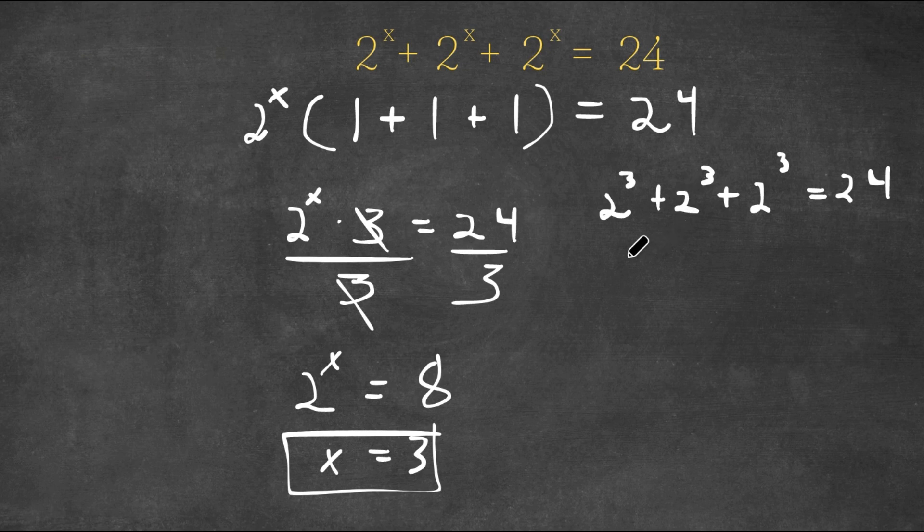2 to the power of 3 is 8, so I have 8 plus 8 plus 8 is equal to 24.